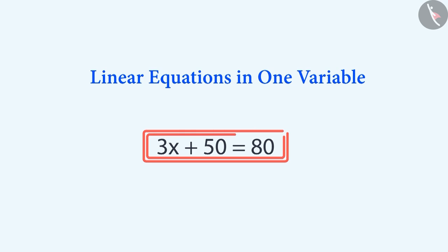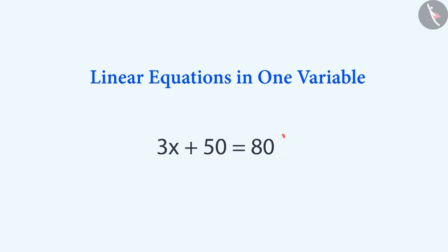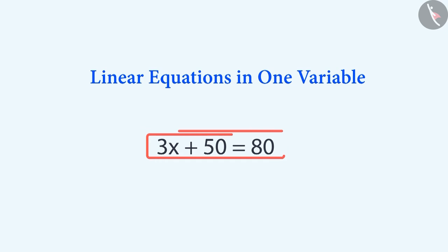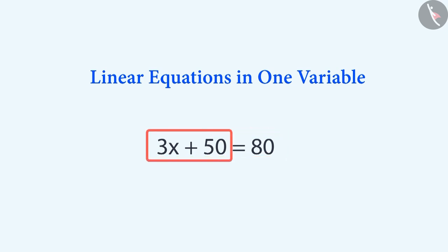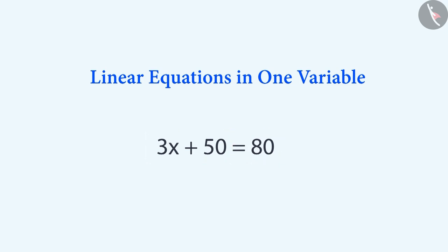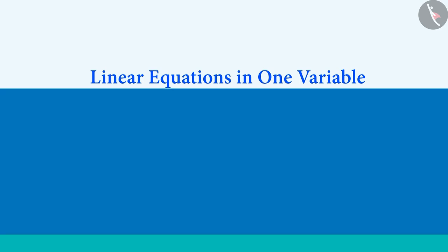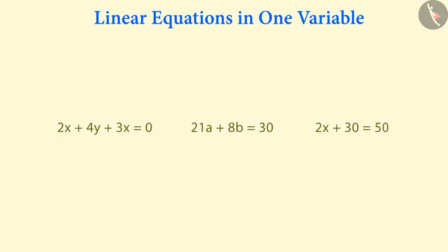Do you remember what this equation tells us? Here, x is a variable whose value we want to find out. This equation tells us that the total value of the left-hand side must be equal to the right-hand side, i.e. 80. Let's start this session with these equations.